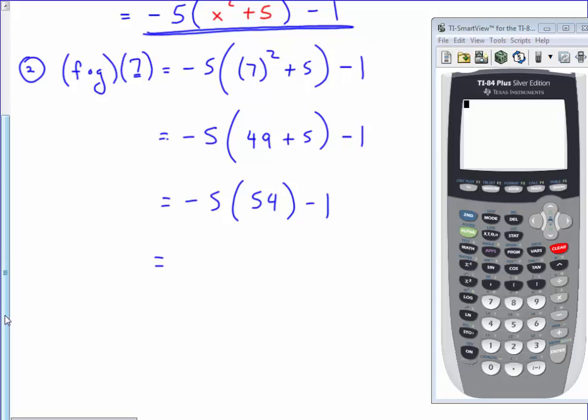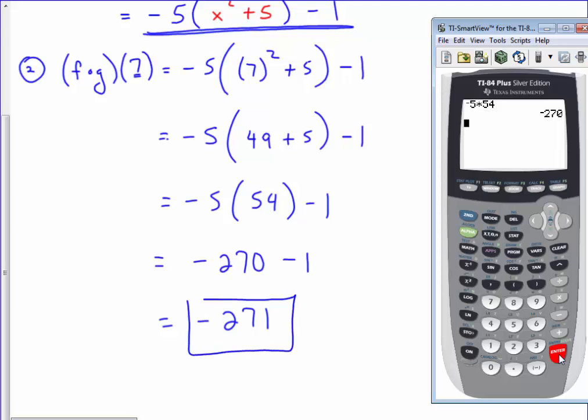And then negative 5 times 54, if you want to do that on your calculator. You go negative 5 times 54 is negative 270. And then we still have the minus 1, so we'd have negative 271 as the function value that they were looking for.